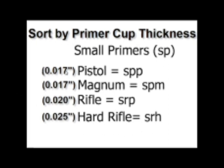The thin cups should be used for your pistol and magnum primers, 17 thousandths. The mid-range 20 thousandths should be destined for your rifle primers. And the thick 25 thousandths cup should be destined for your .223-556 ammo and your .300 blackout. Those likely to be in your AR-15s with your free-floating firing pins.